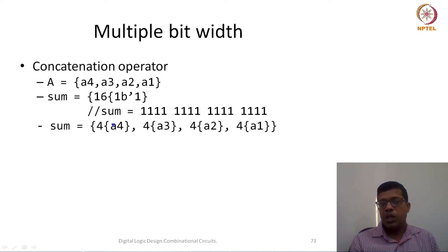This can be generally applicable. Instead of this there could be a variable name or signal name also. For example, I can say sum is equal to 4 times A4, 4 times A3, then 4 times A2, then 4 times A1. Whatever is the value of A1, whether it is 0 or 1, it would be repeated 4 times. That is how this concatenation operator would be required whenever we are handling multiple bit width signals.